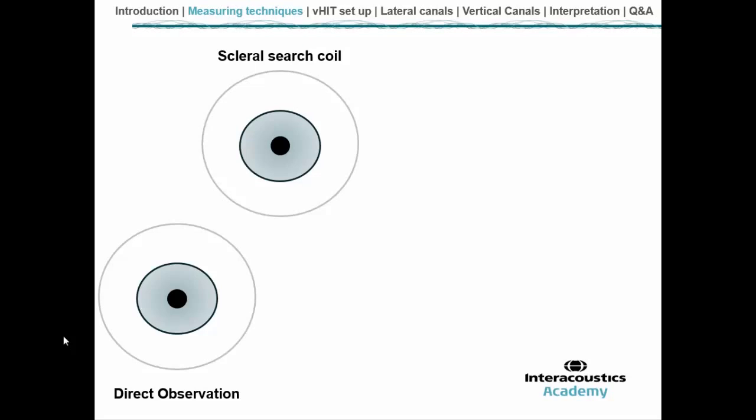After direct observation, a different method was developed known as the scleral search coil. This involves placing a contact lens on the patient's eye and placing them in a large magnetic field, which provides a very sensitive measure of eye movement in relation to head movement. Although this is a very sensitive test, it's just not very clinically friendly. The contact lens is very uncomfortable and patients will not tolerate it in a day-to-day clinical environment. The equipment is so bulky, the calibration process and expense are just too much for a general clinical environment.